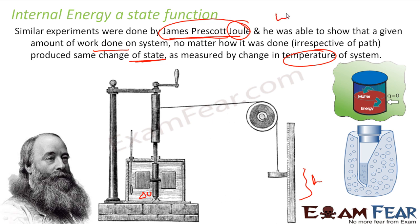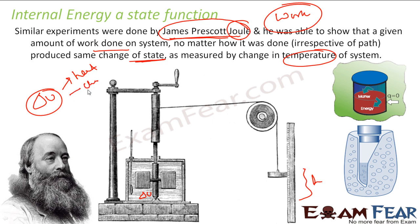Whatever he observed was true — that means the path doesn't matter. And that's why, if you see, the work done is a path function depending on the path, but the change in energy is not a path function. Because Joule himself proved that you can change the internal energy by various paths — heat it with the rod, churn it, do some chemical reaction — and the change in internal energy is the same. That implies that the work done by all these different methods is the same. That is what James Prescott Joule has shown: no matter which path you follow, if the work done on the system is the same, it will have the same internal energy change.